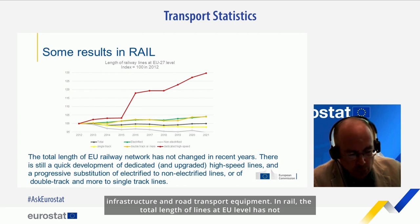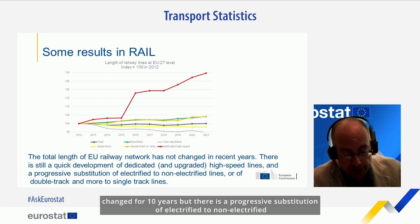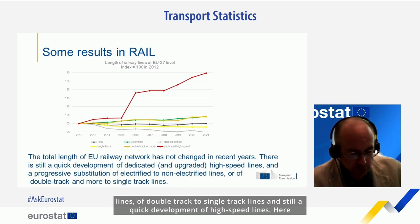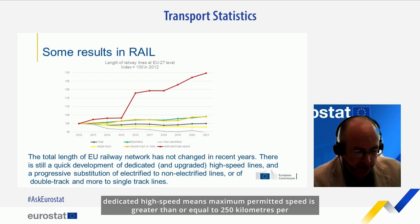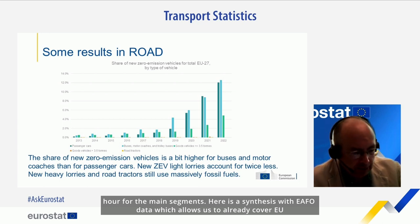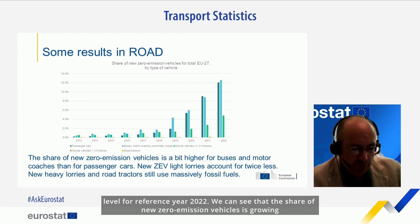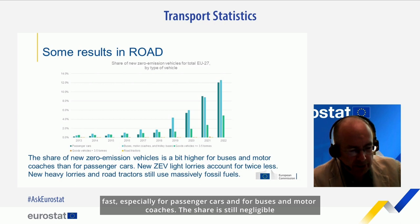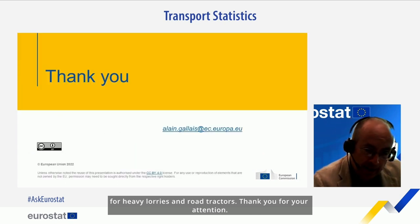I will now show two typical chapters obtained from the Common Questionnaire: rail infrastructure and road transport equipment. In rail, the total length of lines at EU level has not changed for 10 years. But there is a progressive substitution of electrified to non-electrified lines, of double-track to single-track lines, and still a quick development of high-speed lines — where dedicated high-speed means a maximum permitted speed greater than or equal to 250 km/h for the main segments. Using EAFO data covering EU level for reference year 2022, we can see that the share of new zero-emission vehicles is growing fast, especially for passenger cars and for buses and motor coaches. The share is still negligible for heavy lorries and road tractors. Thank you for your attention.